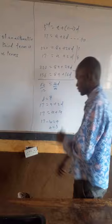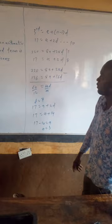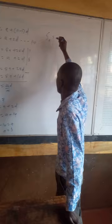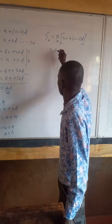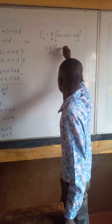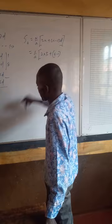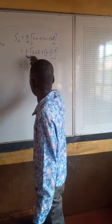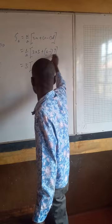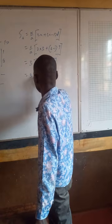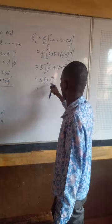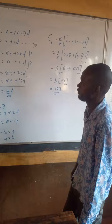The question asked us to find the sum of the first 6 terms. So S_6 is calculated as N over 2 times 2A plus N minus 1 times D. This gives us 6 over 2, which is 3, multiplied by 2 times A — our A is 3 — plus N minus 1, which is 5, multiplied by D which is 7, giving 35. So we have 3 times 6 plus 35, which is 3 times 41, giving us 123. The sum of the first 6 terms is 123.